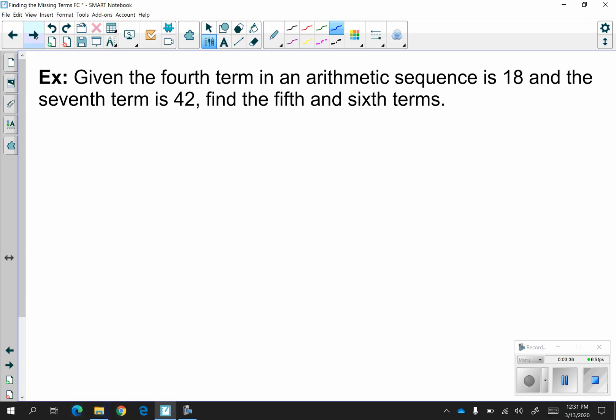So if you try the next one. Given the fourth term in the arithmetic sequence is 18 and the seventh term is 42, they want you to find the fifth and sixth terms. So really we're going up to the seventh term. So I'm going to make seven boxes. There we go, seven. We're saying that the fourth term is 18 and the seventh term is 42.